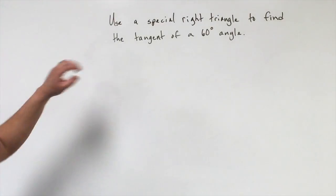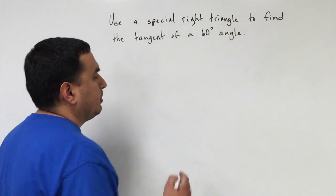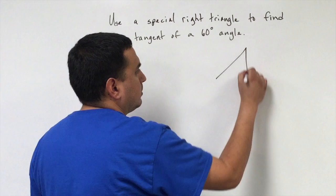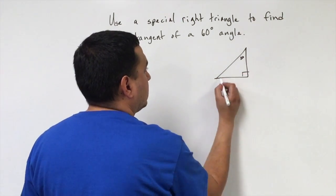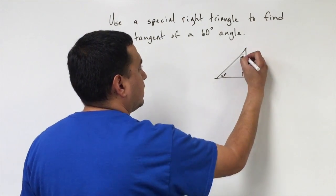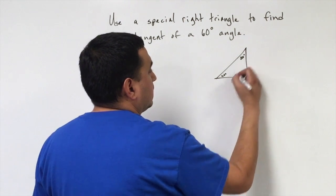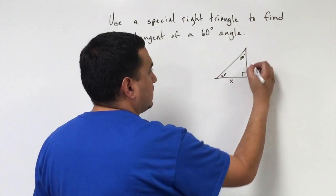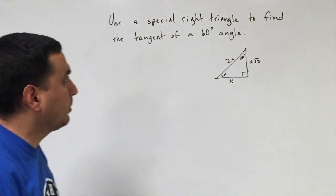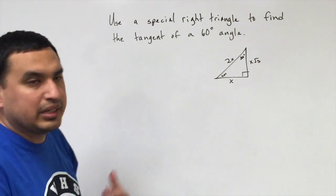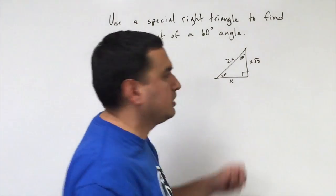Next we have this problem that says use a special right triangle to find the tangent of a 60-degree angle. If I draw a right triangle, let's say this side's 30, this one's 60 degrees here. Remember that we had the formula: our short side's x, this would be x square root of 3, and this would be 2x. Since we're using any special right triangle, we want to make the smallest one possible, so I'm going to replace x with 1.